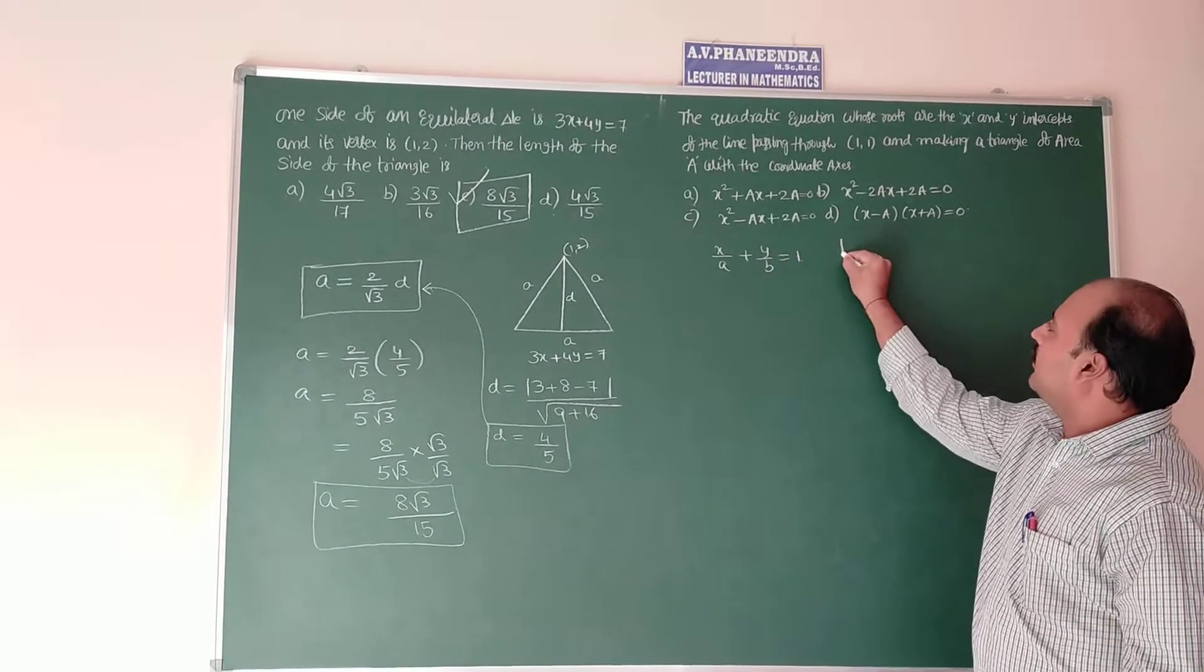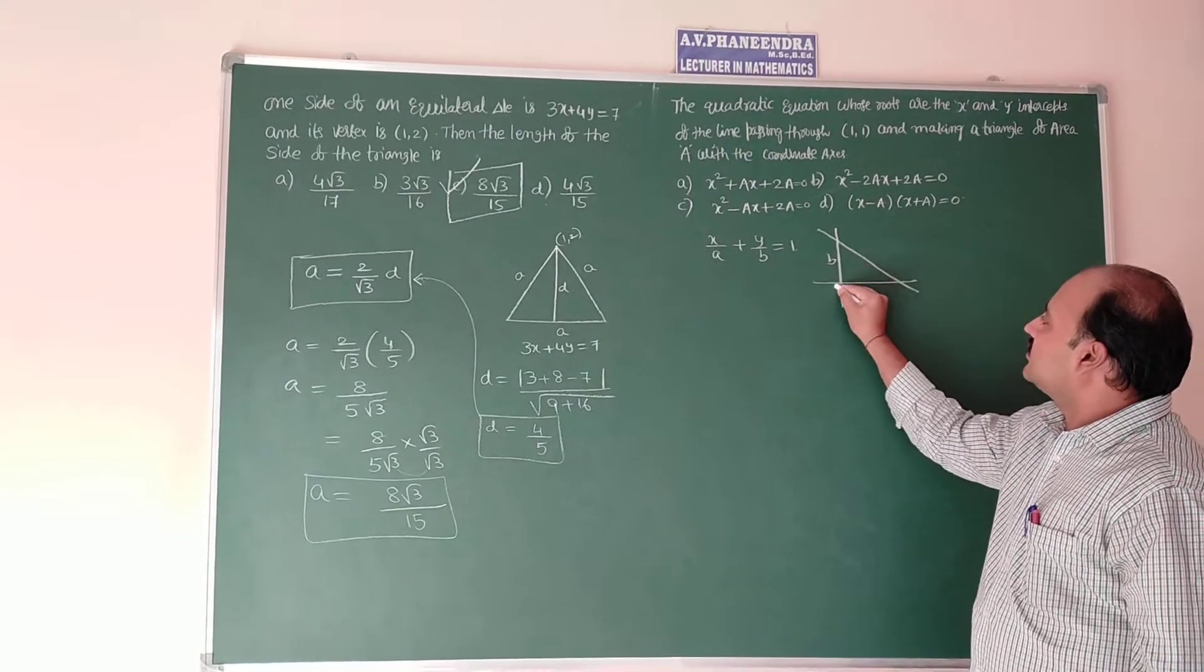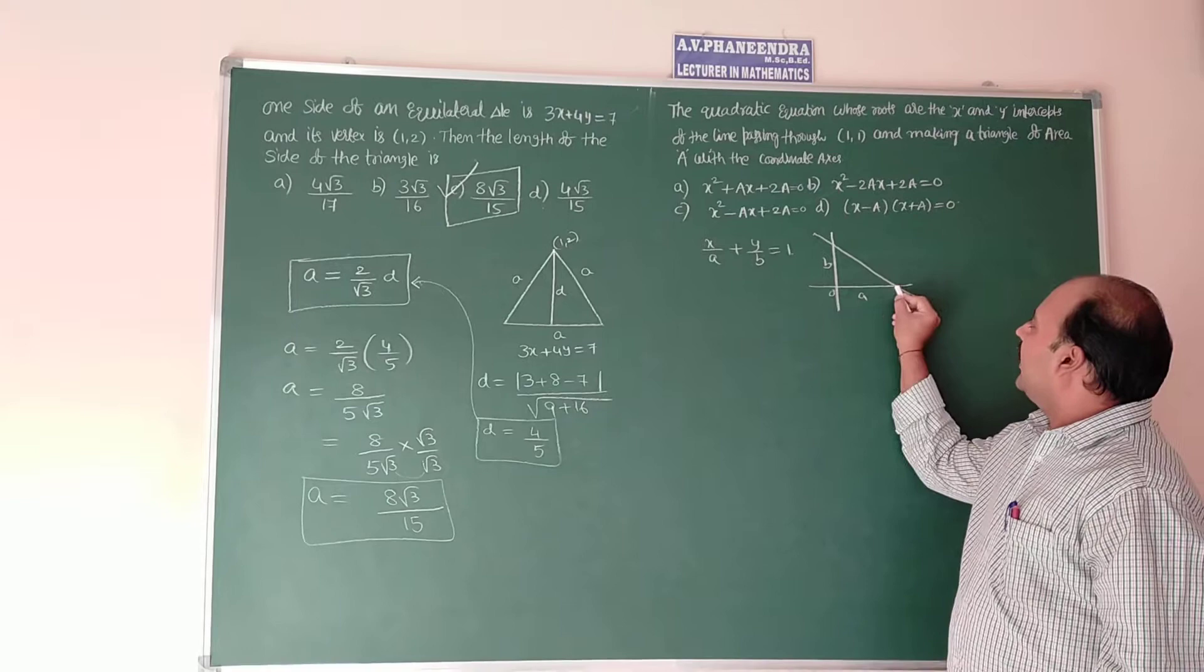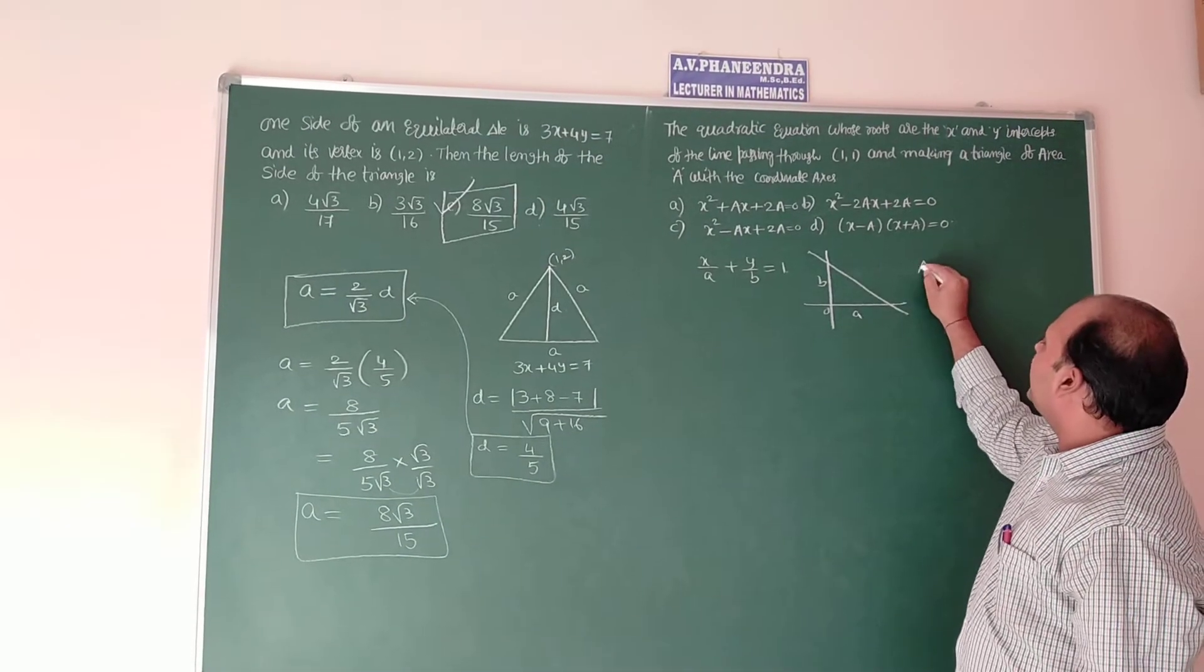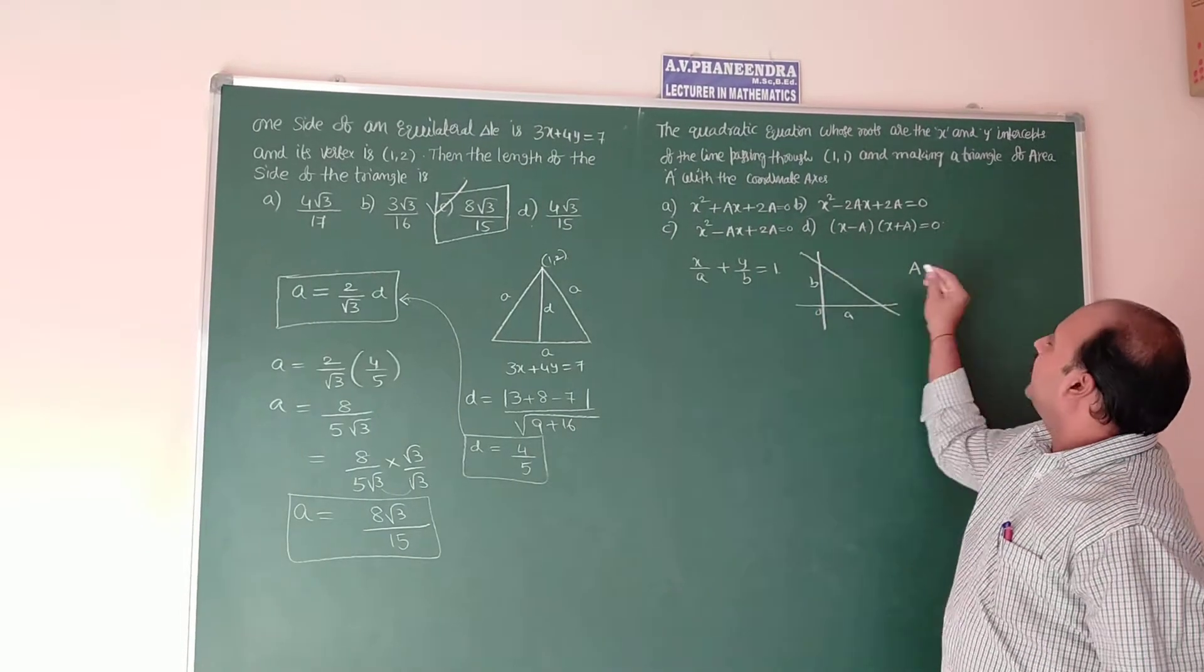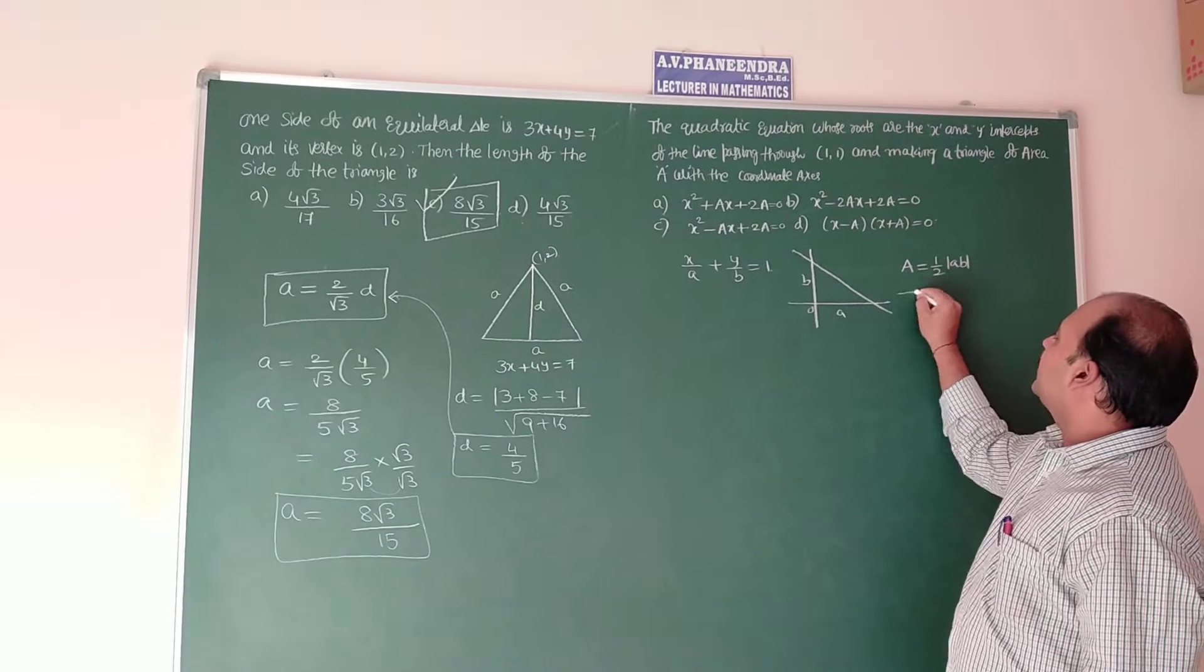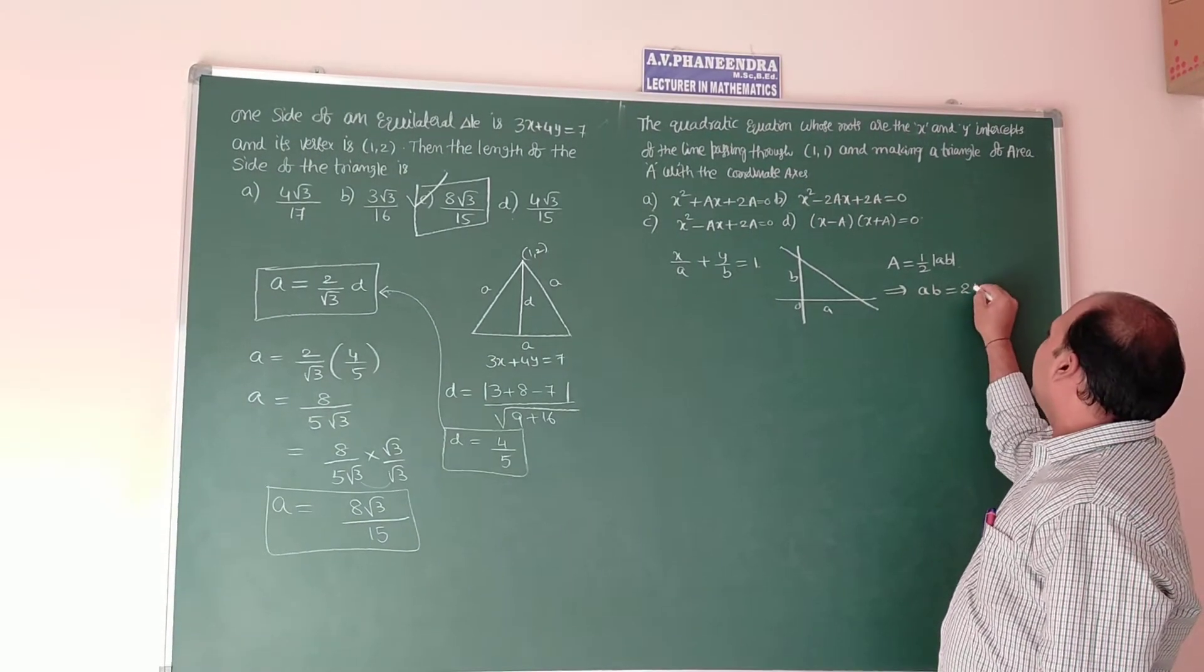This diagram will become like this: this is A units, this is B units. The area formed by the line x by A plus y by B equal to 1 with the coordinate axis is denoted by capital A, is half into mod AB. So cross multiply, mod AB means AB which is equal to 2 into capital A.